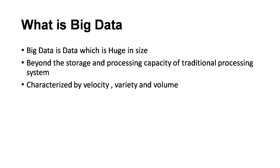If you look into Big Data, it is characterized by velocity — the speed at which data is generated — variety, meaning the type of data, which can be structured, semi-structured, or unstructured, and volume, which is nothing but size.